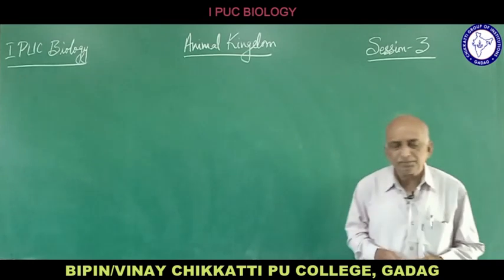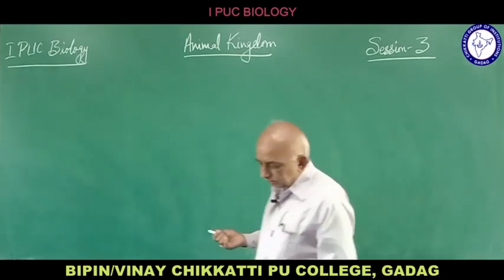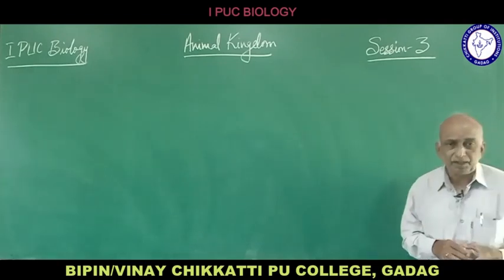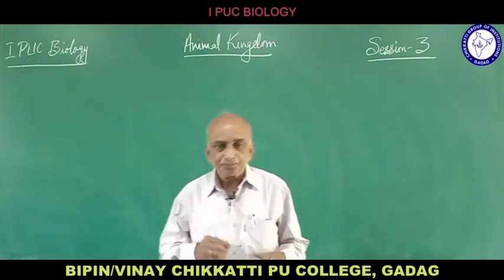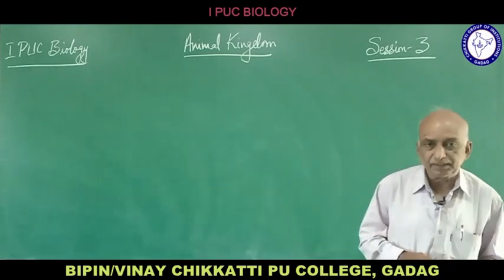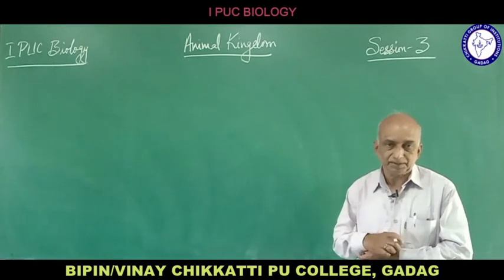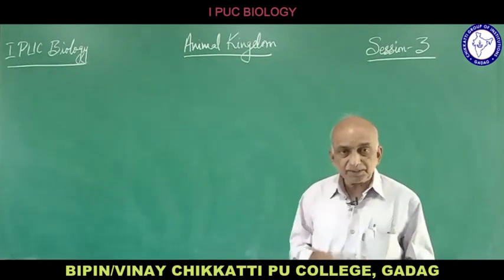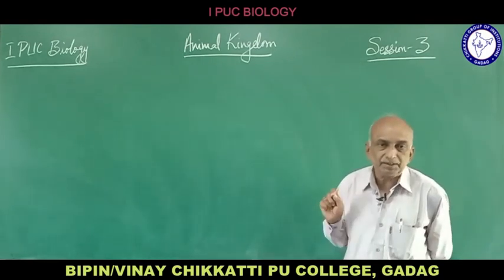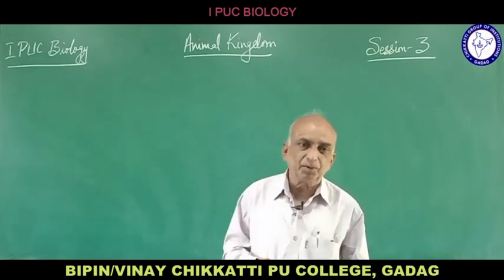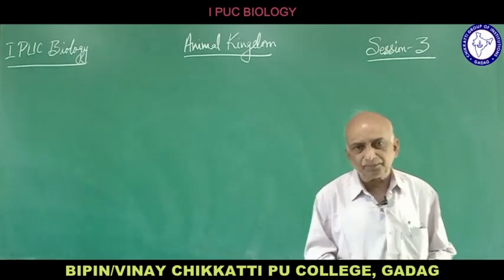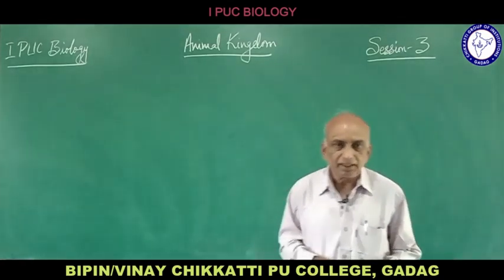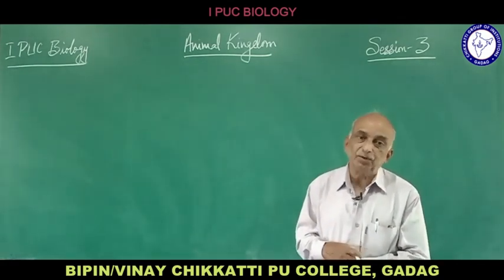In phylum Platyhelminthes — flat worms, liver fluke — they are acoelomates; there is no particular coelom in this phylum. Another important character is the presence of flame cells, which help in excretion and osmoregulation. Flame cells are a characteristic feature of phylum Platyhelminthes only. Liver fluke and tapeworm are examples.